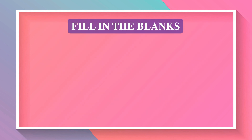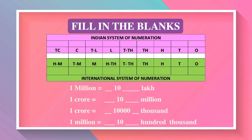Now we use this knowledge to fill in the blanks. When we go from million to lakh, we jump only once, so it will be multiplied by 10: 1 million is equal to 10 lakh. To go from crore to million, we jump only once, so 1 crore is equal to 10 million. To go from crore to 1000, we jump 4 times, so 1 crore is equal to 10,000 thousands. To go from million to 1,00,000, we jump only once, so 1 million is equal to 10 times 1,00,000.